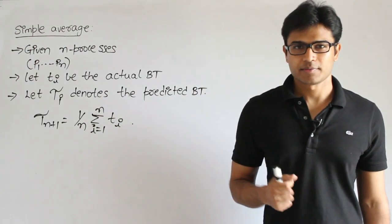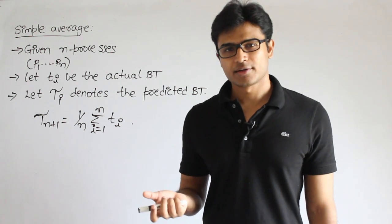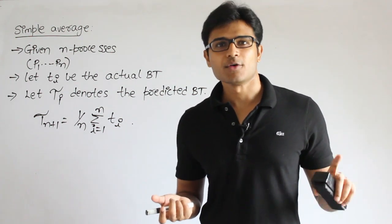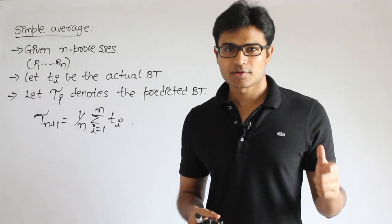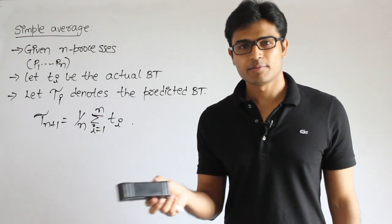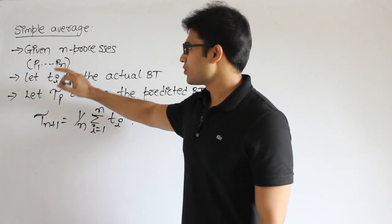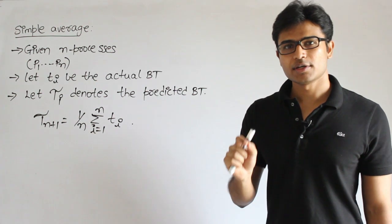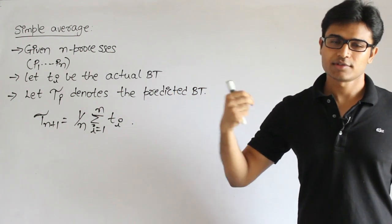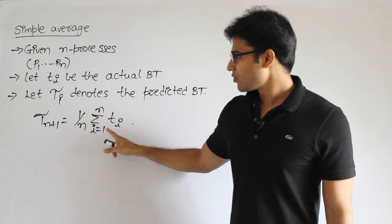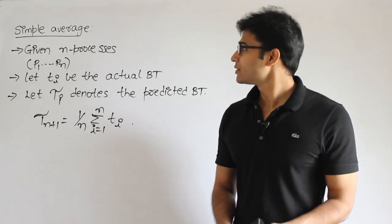The best methods are the dynamic ones. The first dynamic method is simple averaging. If you are scheduling process P5, you look at the actual burst times of the already-completed processes P1 through P4, take their average, and predict that P5 will take that average time. Formally, if there are n processes and t_i is the actual burst time, then τ_i (the predicted burst time) is (1/n) times the sum of all actual burst times.